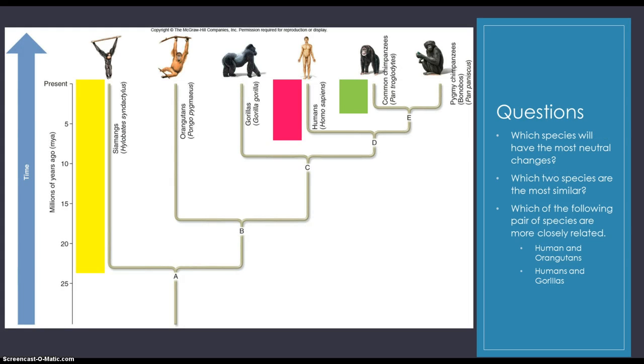So since you guys are masters at molecular clocks and neutral changes, the neutral theory of evolution, answer the following three questions. Which species will have the most amount of neutral changes? Which two species are the most similar? And which of the following pair of species are more closely related, humans and orangutans or humans and gorillas? I'll give you guys a moment to think about it. It's a piece of cake.